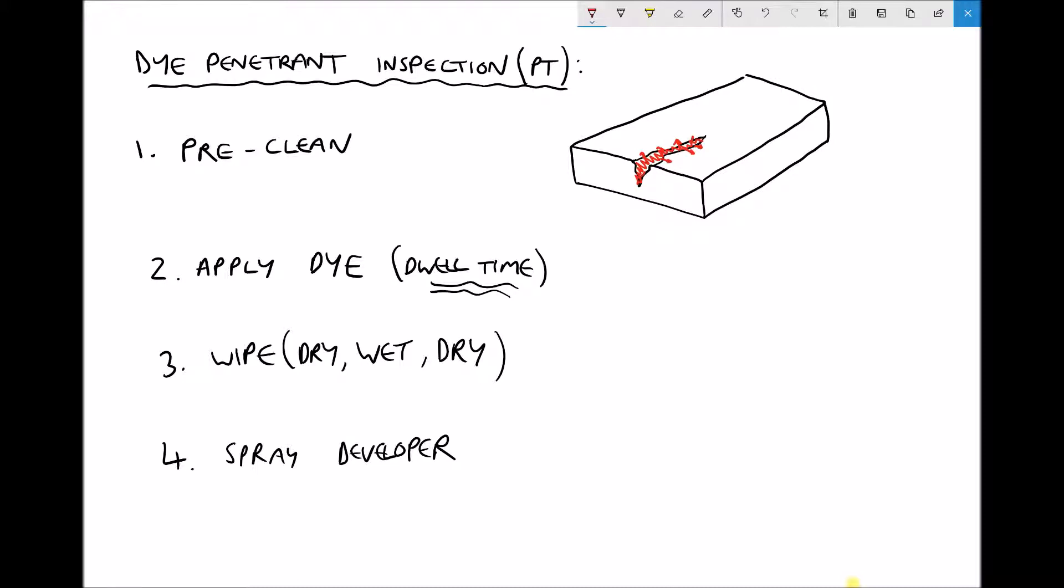To summarize, dye penetrant inspection can be used to identify surface cracks on a range of different materials and it's particularly used to identify defects in welds and weld lines.